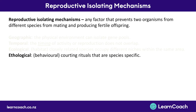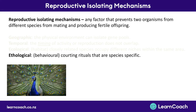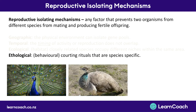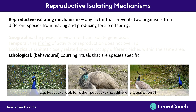The fourth mechanism is ethological — behavioral differences, usually about how animals court each other. For example, a male peacock is innately trained to display its feathers, and the female peacock is trained to respond to that display. This is a ritual specific to peacocks as a species, making them much less likely to mate with other birds. This could also be a different mating call, which is still specific to each species.